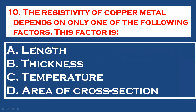Question 10: The resistivity of a copper metal depends only on one of the following factors. Resistivity ρ depends only on the nature of the material and its temperature. Since the material is fixed as copper, the resistivity depends only on temperature. Option C is the correct answer.